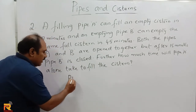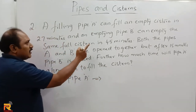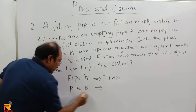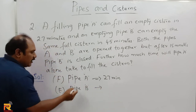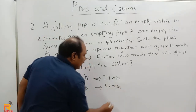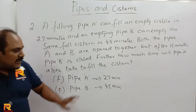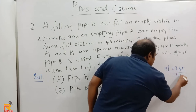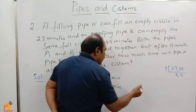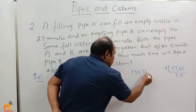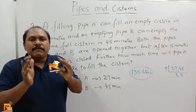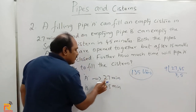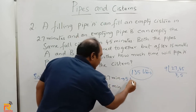There are two pipes: pipe A, which can fill an empty cistern in 27 minutes, and pipe B, an emptying pipe, which can empty the complete cistern in 45 minutes. We find the LCM of 27 and 45: 9 threes and 9 fives, so 9 × 3 = 27, and 27 × 5 = 135. Let us assume the total capacity of the tank is 135 liters. Pipe A fills 135 liters in 27 minutes, so it fills 135 ÷ 27 = 5 liters per minute. Pipe B empties 135 ÷ 45 = 3 liters per minute.